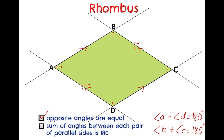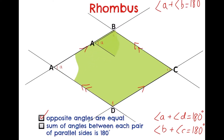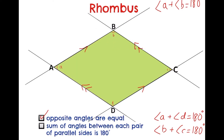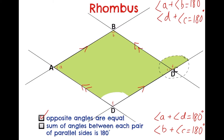Using that, we can also say that angle A plus angle B is also equal to 180 degrees. We can also say that angle D plus angle C is equal to 180 degrees. I'm going to cut out angle D and shift it up, and you will see it forming another straight line.